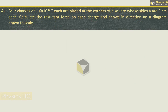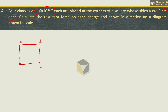Next: four charges of 6×10⁻⁸ coulomb are placed at the corners of a square whose sides are 3 centimeters each. Calculate the resultant force on each charge and show its direction on a diagram drawn to scale. Let us draw a square with corners labelled A, B, C, D. At each corner we have charge Q which is 6×10⁻⁸ coulomb. Since the distribution is symmetrical, each charge experiences the same total force.